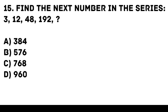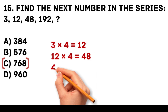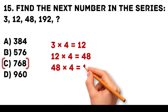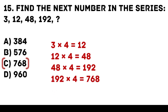Answer: C. 768. Each number in the series is multiplied by 4. 3 times 4 is equal to 12. 12 times 4 is equal to 48. 48 times 4 is equal to 192. 192 times 4 is equal to 768.